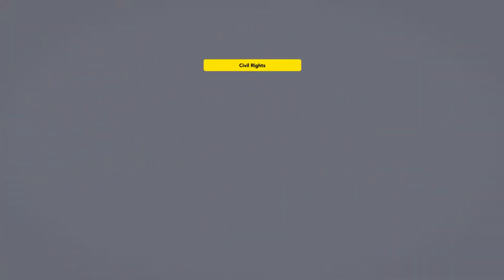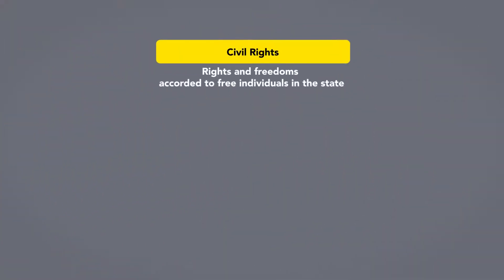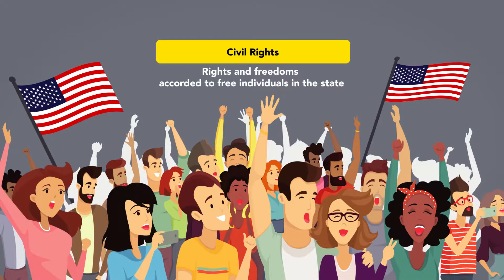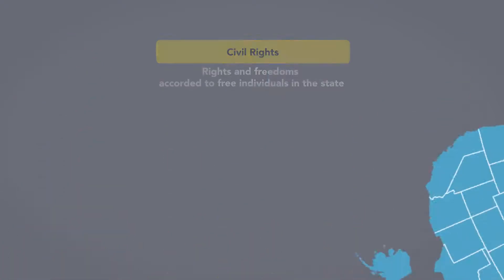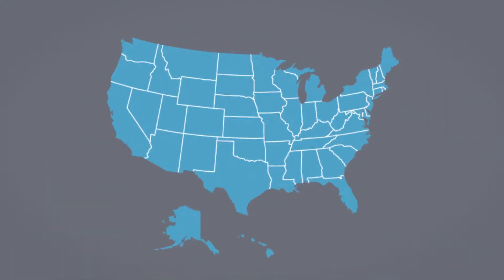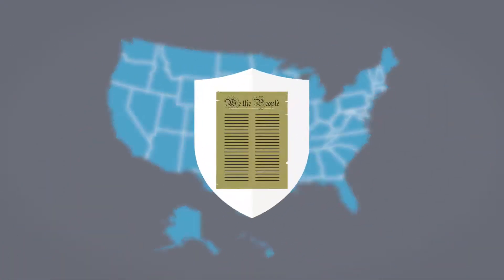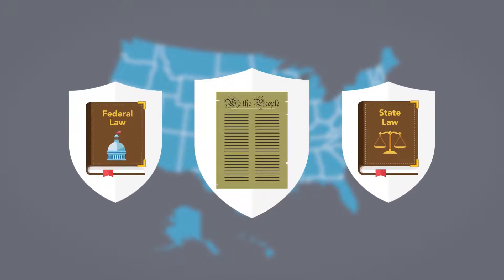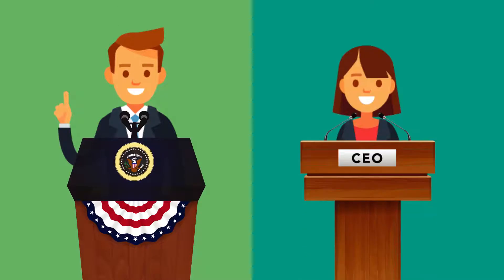Civil rights are defined as the rights and freedoms accorded to free individuals in the state. In the United States, civil rights refer to constitutional protections against government action and federal and state laws that protect against infringements by government and private actors.